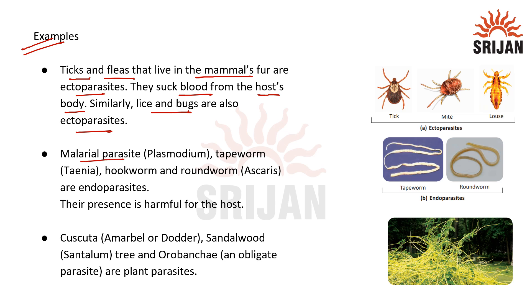Whereas malarial parasite Plasmodium, tapeworm, Tinea, hookworm, roundworm, and Ascaris are endoparasites because they live inside the body of the host and their presence is harmful to the host. Cuscuta, Amarbel, sandalwood, and Orobanche are examples of plant parasites because they are non-photosynthetic and obtain their nutrition from the host plant.